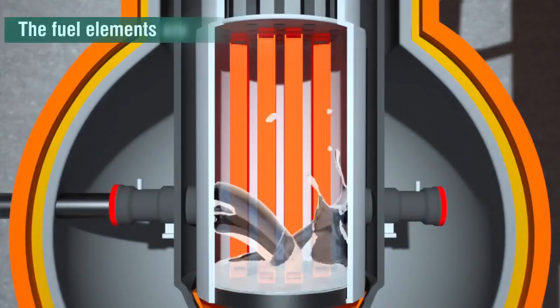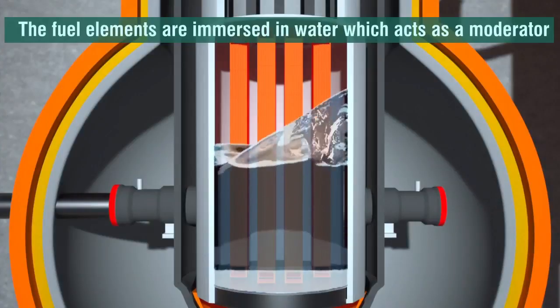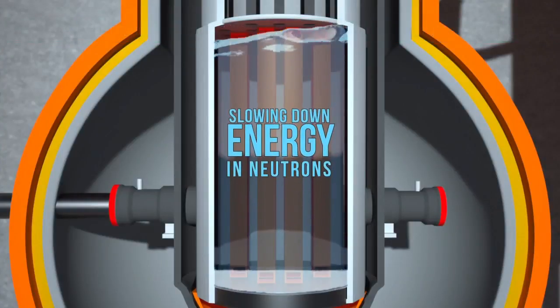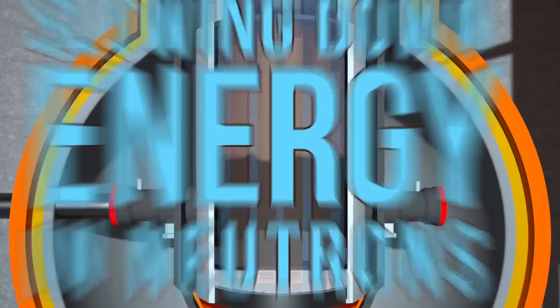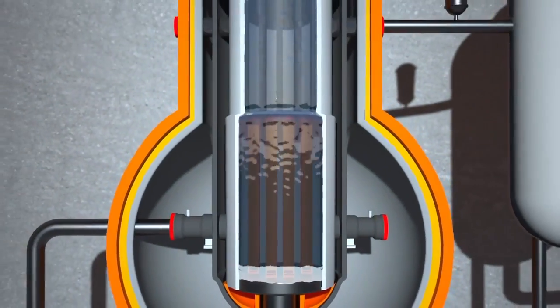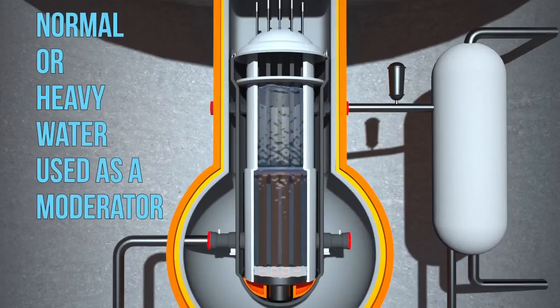The fuel elements are immersed in water which acts as a moderator. Moderator is essential in slowing down the energy in neutrons in nuclear reactors which are produced during the fission process by the fuel elements. Normal or heavy water is generally used as a moderator.